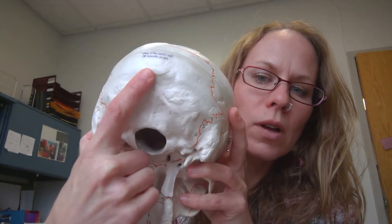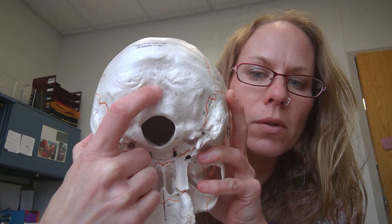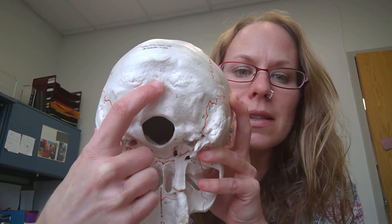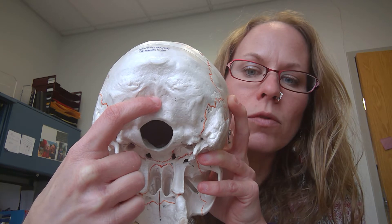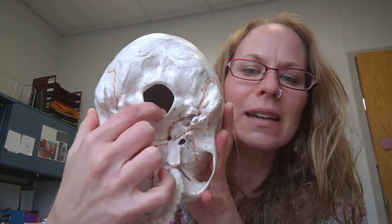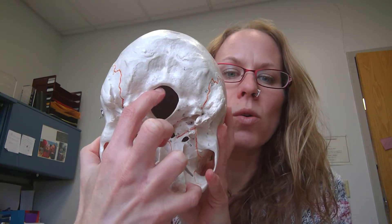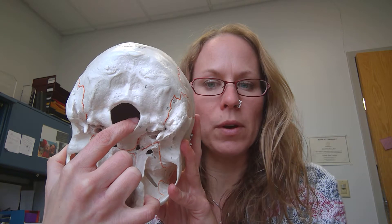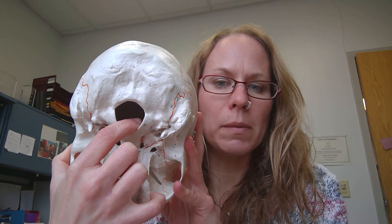From the external occipital protuberance, I continue my finger down and find this raised line in the bone. A raised line in the bone is called either a crest or margin — in this case it's called a crest, so this is the external occipital crest. Then I move my finger straight down into this giant hole. This hole is called the foramen magnum. The term foramen is used for any holes in the bone, typically allowing a blood vessel or nerve to penetrate through. In this case, it's where the spinal cord meets up with the brain.